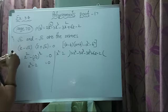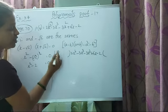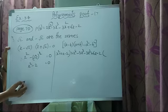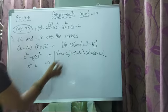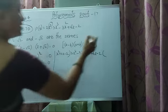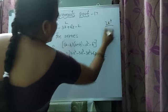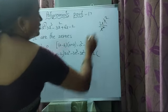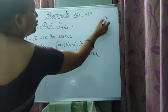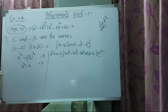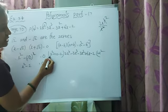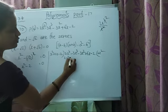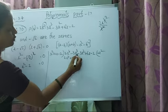First term of dividend by first term of divisor: 2x power 4 by x square. 4 minus 2 is 2, so the result is 2x square. Multiply each and every term by 2x square. 2x square times x square gives 2x power 4. 2x square times 0x gives 0. Change symbols — minus into minus gives plus. 2 times 2 gives 4, so 4x square.